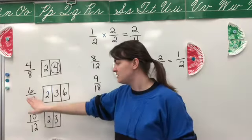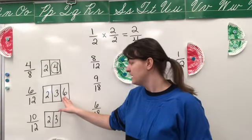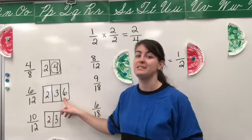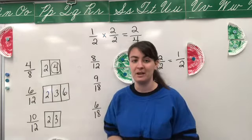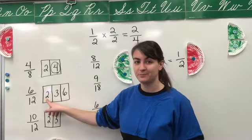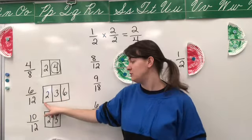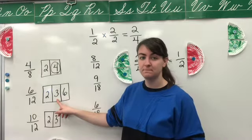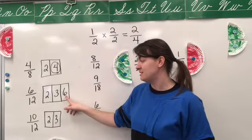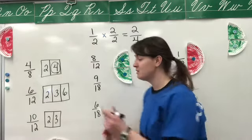Now let's look at 6/12. I've got options: two, three, and six. Let's start with the largest — six. Can I divide six by six? Yes. Can I divide 12 by six? Yes. So six is probably my correct answer. Can I divide by two? Yes, but six is larger than two. How about three? Six divided by three and 12 divided by three both work, but six is larger than two or three. When I reduce fractions, I want the largest possible number, so I'll circle six.